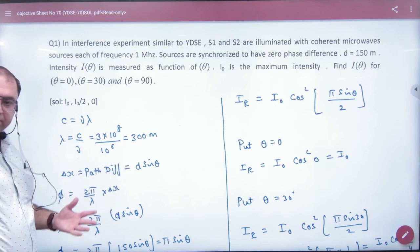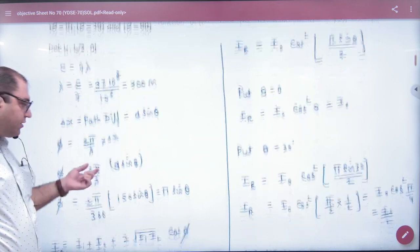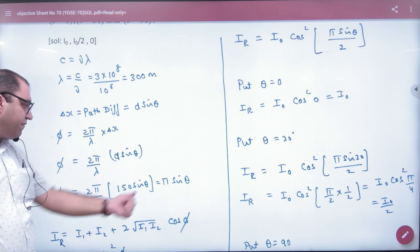So path difference d sin theta, what is the phase difference here? 2π by λ into path difference d sin theta. So here d's value is 150 given, sin theta in the form of phase difference.